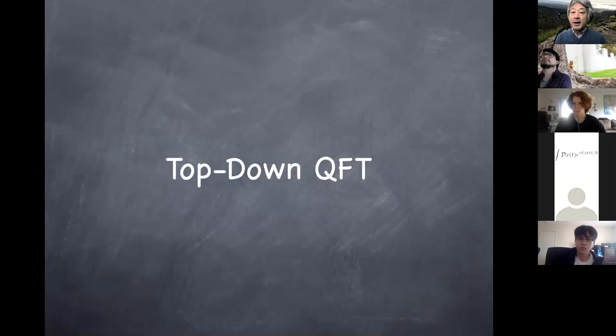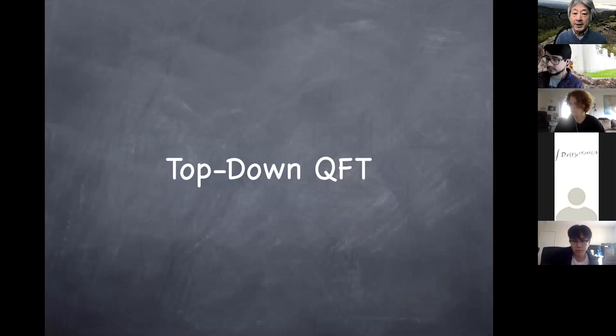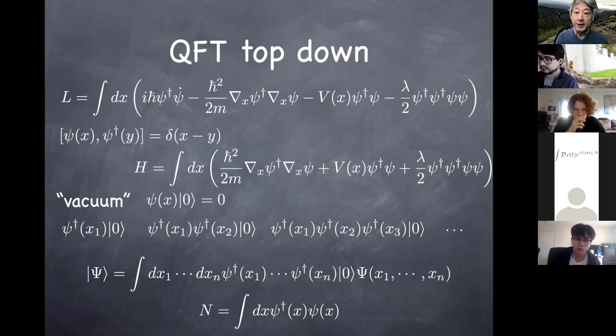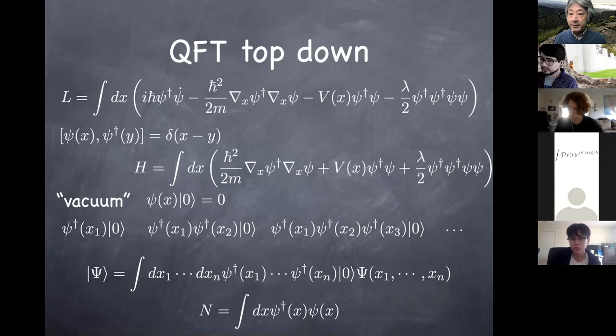We constructed the QFT in a heuristic fashion, starting from a harmonic oscillator at every position in space, and came up with the Lagrangian at the end. Now we'd like to do a top-down approach: suppose you are given this Lagrangian — what do you get? I want to make sure both directions meet in the middle. You may also ask why this Lagrangian is something we have to take seriously as a starting point — I'll give a bit of an answer to that later.